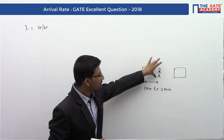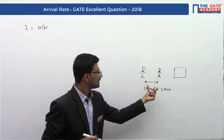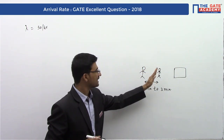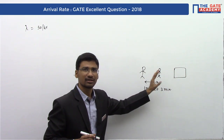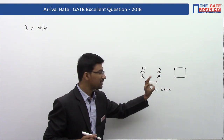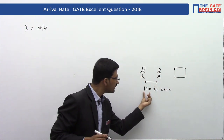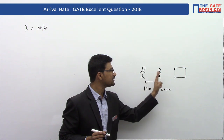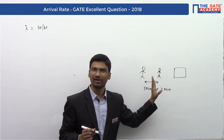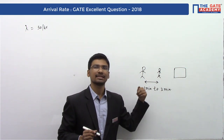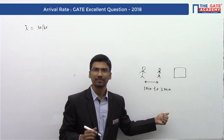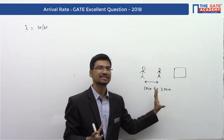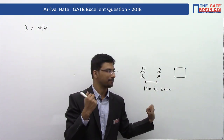After the first customer enters the queue, the time period between the second customer and the first customer should be between one minute and three minutes. The time gap between these two customers may be one minute, maybe two minutes, or maybe three minutes. That is what the question is asking us to find the probability for.